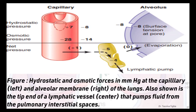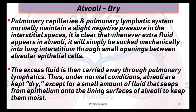This is a figure from the physiology textbook by Guyton and Hall, showing hydrostatic and osmotic pressures in the capillary on the left side and the alveolar membrane on the right side, along with lymphatic vessels that pump fluid from pulmonary interstitial space. Alveoli are kept dry because pulmonary capillaries and the pulmonary lymphatic system normally maintain a slight negative pressure in the interstitial space. Whenever extra fluid appears in alveoli, it is sucked mechanically into lung interstitial space through small openings between alveolar epithelial cells and carried away through pulmonary lymphatics. Thus under normal conditions, alveoli are kept dry except for a small amount of fluid that seeps from the epithelium to keep them moist.